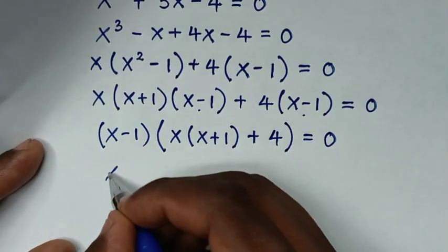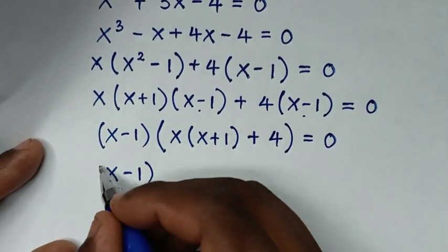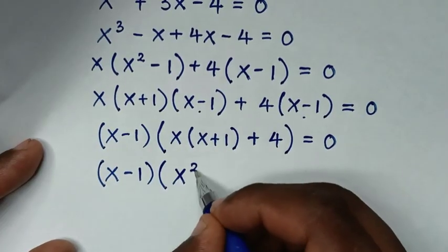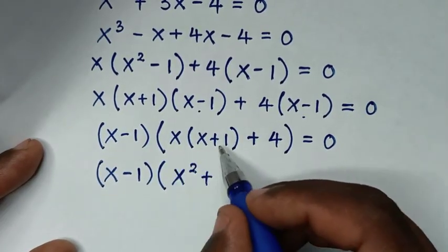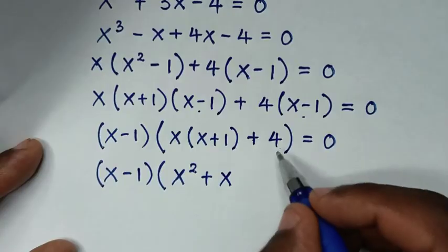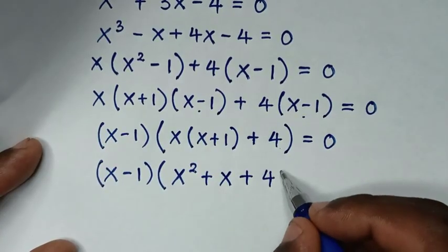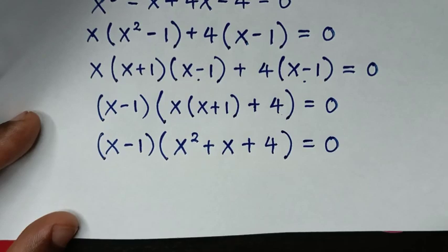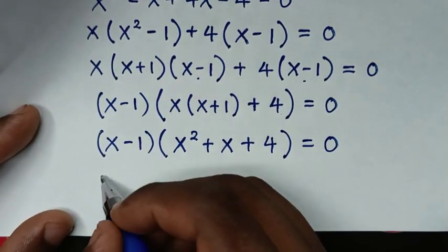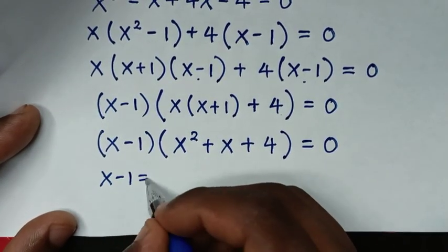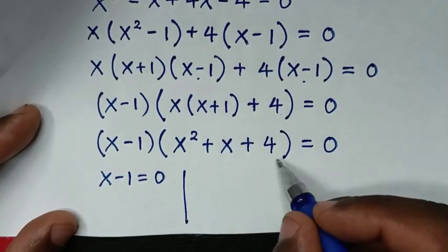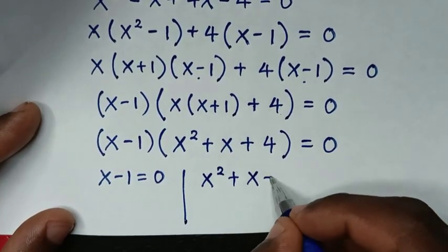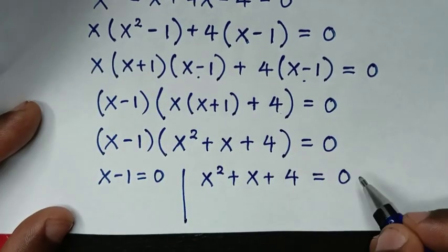Then (x minus 1) is common, so we factor it out: (x minus 1) times (x(x plus 1) plus 4) equals 0, which gives (x minus 1)(x squared plus x plus 4) equals 0. We now have two equations: x minus 1 equals 0, and x squared plus x plus 4 equals 0.